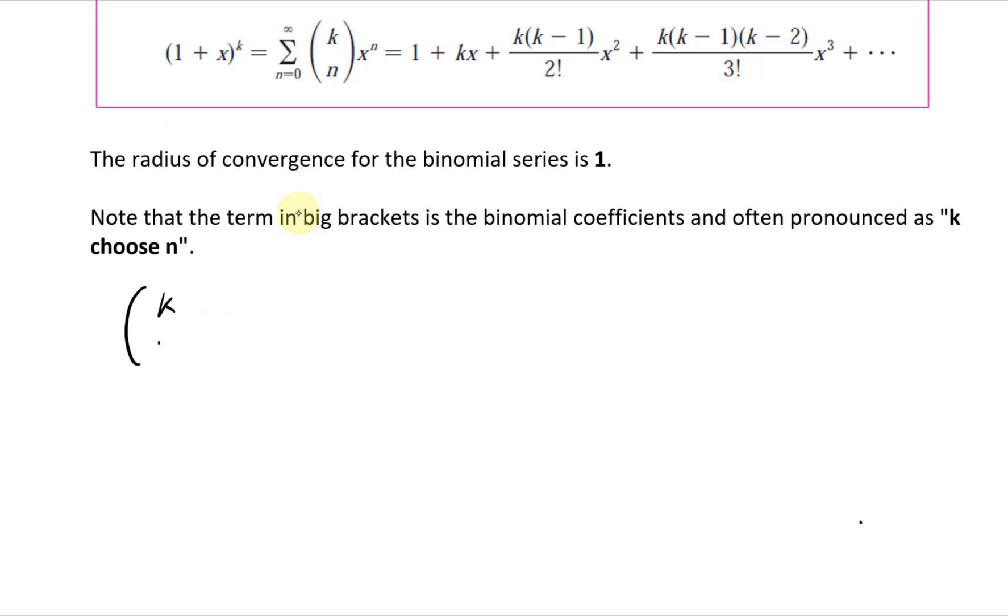So here's the formula for k choose n. This equals k factorial over n factorial times k minus n factorial.